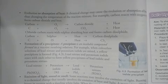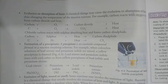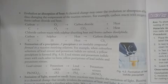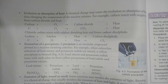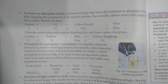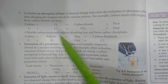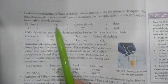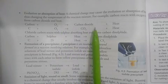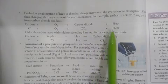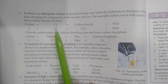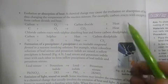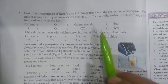Today in this video we will discuss the evolution or absorption of heat. If heat is evolved or absorbed, this is also a chemical change. If there is a change in temperature of the reaction mixture, that indicates a chemical change. For example, when carbon burns in the presence of oxygen, carbon dioxide is produced and heat is evolved.